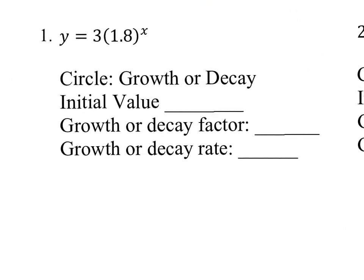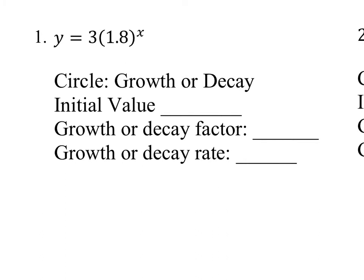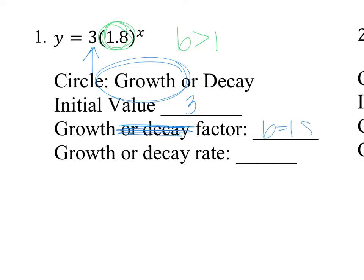For number 1, I need to decide if it is going to be growing or decaying. What is b? b is 1.8, so b is larger than 1 — that means it is going to be growth. My initial value is a, and a equals 3, so my initial value is 3. My growth factor is just b, and b equals 1.8. So that is my growth factor.